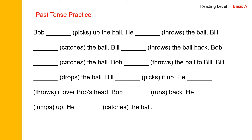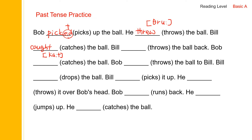Now let us read the story in past tense. Past tense of pick is picked — P-I-C-K, regular verb, add -ed: picked. Past of throw is threw — T-H-R-E-W. And catch is irregular: caught — C-A-U-G-H-T. Read: caught. And throw: threw, catch: caught.